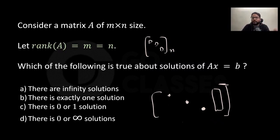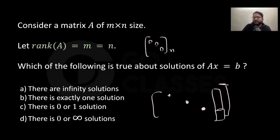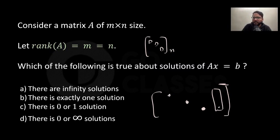This is clear because every row and every column has a pivot — there are no zero rows. You can easily solve it. The dimension of b is the same as the dimension of the columns of A, so there is a unique solution.